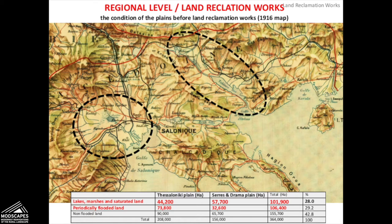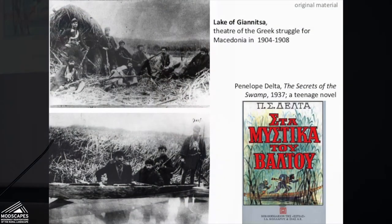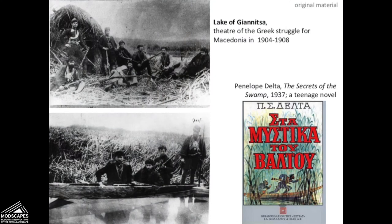To ameliorate the tight land situation, the government undertook major land reclamation works in the plains of Thessaloniki and Serres — you can see them marked with black circles on the map. In these regions there was an abundance of stagnant waters and shrublands, flooding of rivers, a situation that did not allow full exploitation of the soils. Particularly around the lake of Yannitsa, which was known as the theatre of the struggles for the liberation of Macedonia in the early 20th century, there is interesting visual, historical, and literary material. Thus, extended drainage and land development works had to be planned in the Macedonian Plains after 1925 and implemented by the mid-1930s.